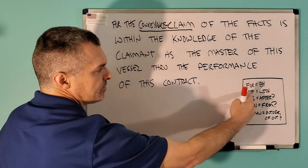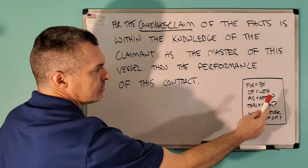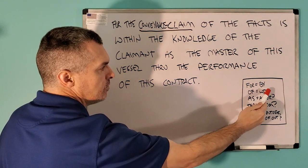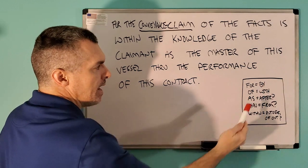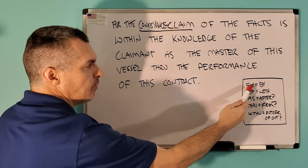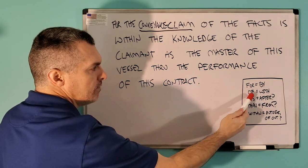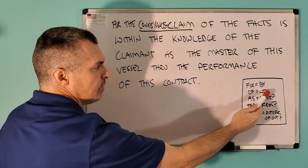These are the positionals in Correct-Sentence Structure: for, of, with, and by. For is congruent with by, and of is congruent with with.